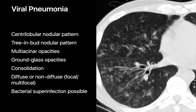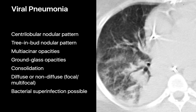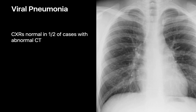The imaging presentation of viral pneumonias can be quite diverse, ranging from centrilobular and tree-and-bud nodular patterns, to multi-acinar opacities, to ground glass opacities, to consolidation, and sometimes a combination of any of these features. Distributions may be focal, multifocal, or diffuse. Since bacterial superinfection is possible, a heterogeneous asymmetric pattern could represent viral infection alone or viral infection with bacterial superinfection. In about half of cases, viral pneumonia opacities may be mild enough to be detectable only on CT and invisible on chest radiography.